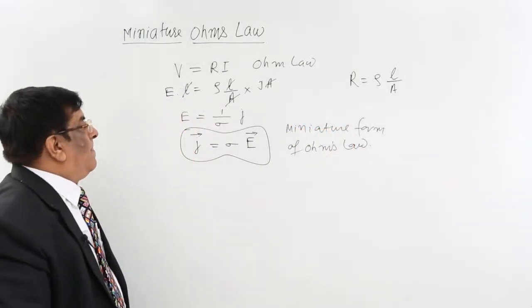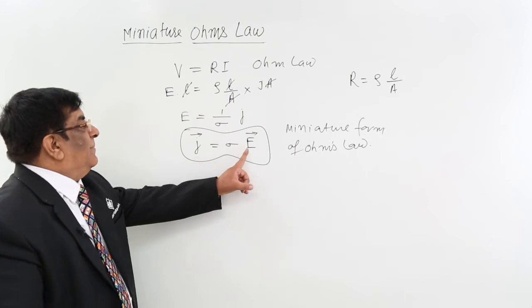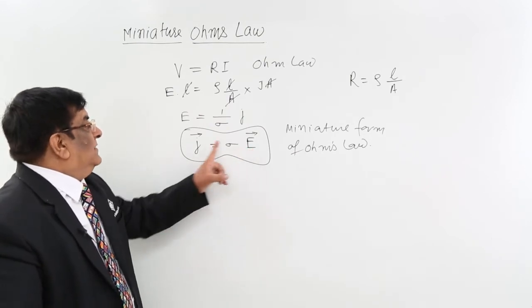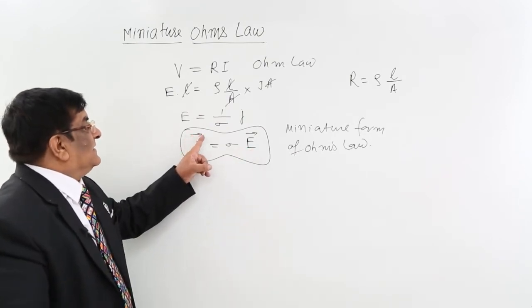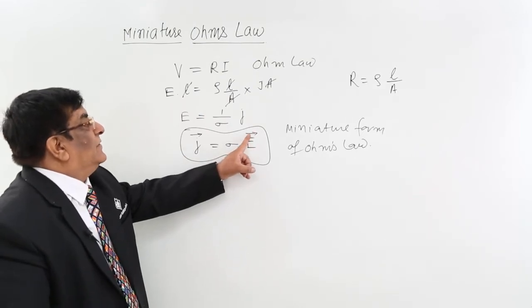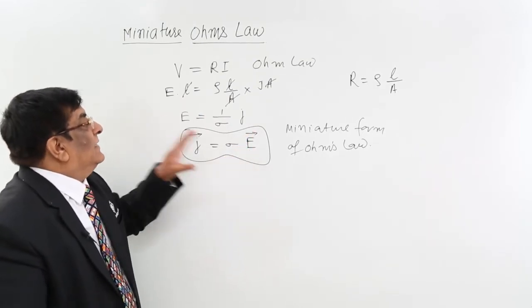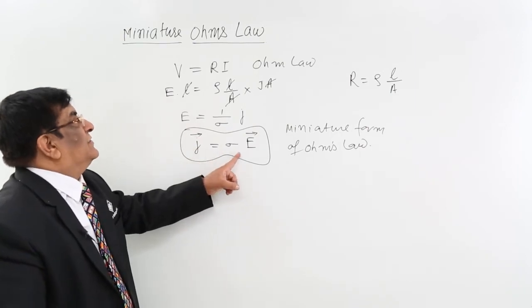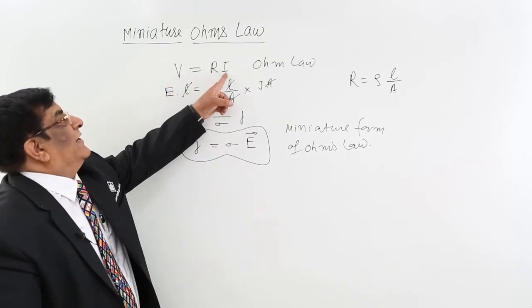This tells us that current density depends upon electric field. This tells us that current density direction depends on the direction of electric field. This is a vector relation. This is a scalar relation.